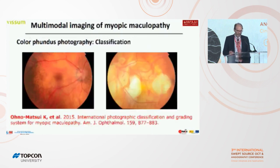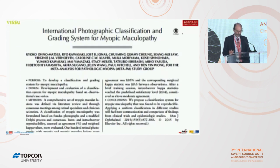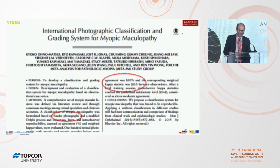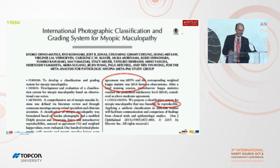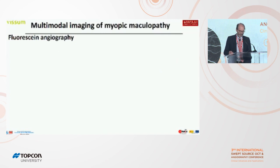Color fundus photography may also help us in diagnosing posterior pole detachment in cases of a macular hole as this one. Based on color fundus photography, Professor Ono Masui and co-workers proposed a new classification to study myopic maculopathy. The authors obtained very good agreement, more than 85%, and weighted kappa statistics more than 0.6 — a good classification that is reproducible for studying and classifying myopic maculopathy.